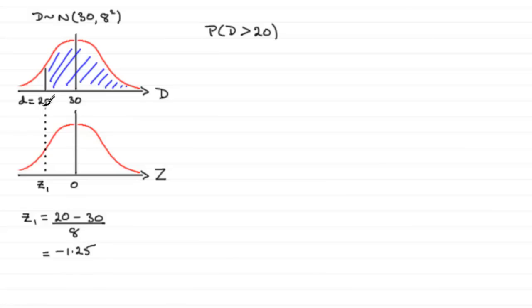And what this is saying is that this value here of 20 is minus 1.25 standard deviations below the mean of 30. So what we want then is this area to the right. Let's just mark this in again, this area to the right of our Z1 value. Now we can put this up here, that the probability of being greater than 20 is exactly the same as the probability that Z is greater than minus 1.25.